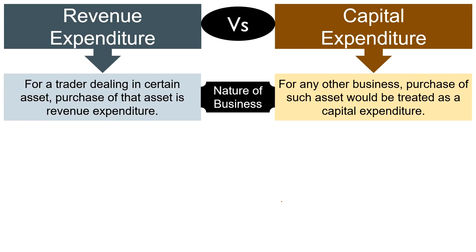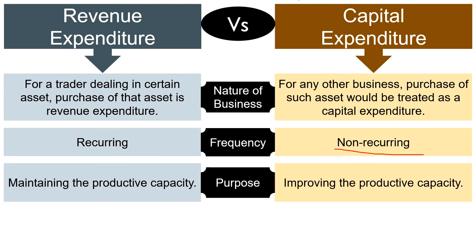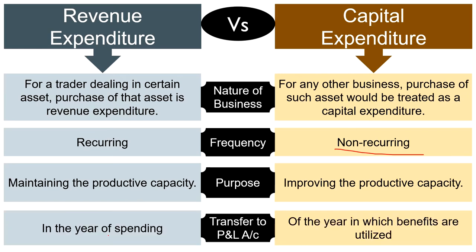But for any other businessman not dealing in that particular asset, like furniture in our example, its purchase would be treated as a capital expenditure. Regarding Frequency, if an expenditure occurs multiple times in an accounting year it is regarded as revenue expenditure, whereas capital expenditure is a one-time outlay of funds and is non-recurring in nature. While revenue expenditure aims at maintaining the productive capacity of the firm, capital expenditure aims to improve it. The amount of revenue expenditure is transferred to the profit and loss account in the year of spending, whereas capital expenditure is transferred in the year in which the benefits are utilized.